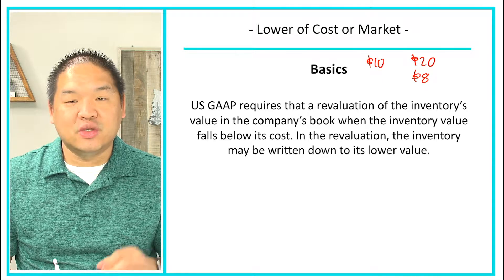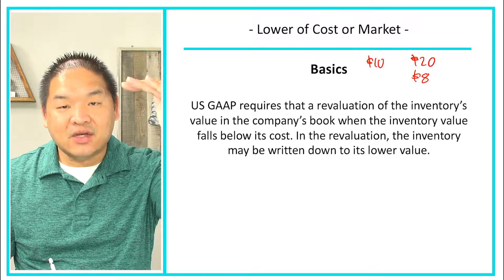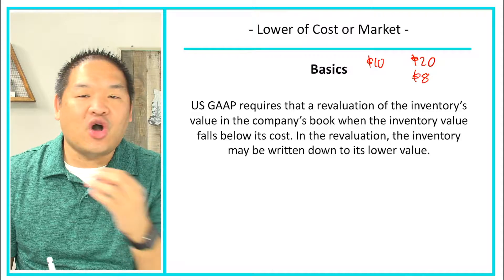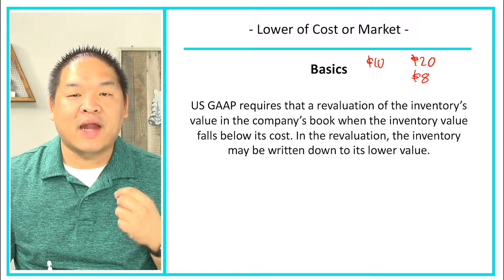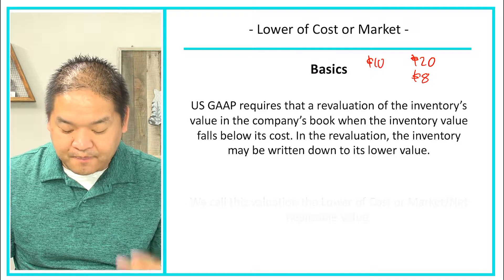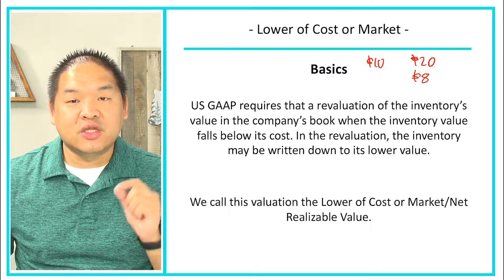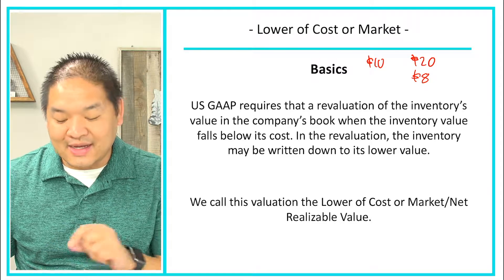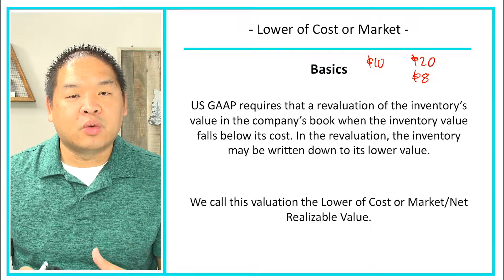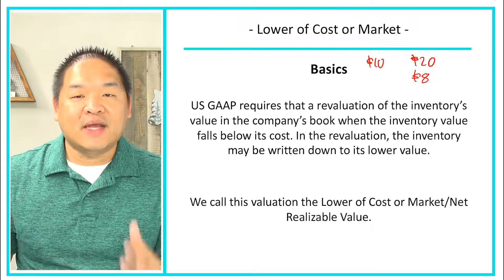Notice that our market price has gone below what it costs to acquire the item — it cost ten dollars to acquire but we can only sell it for eight. In the revaluation, the inventory may be written down to its lower value. In this case we lower it from ten dollars to eight dollars in our books, taking a two-dollar loss on each item we own. We call this valuation the lower of cost or market, net realizable value.